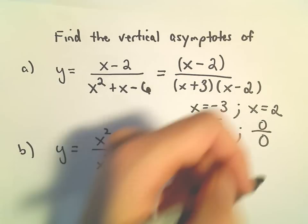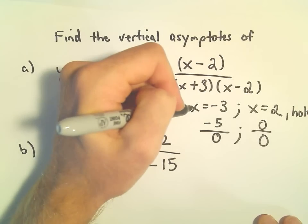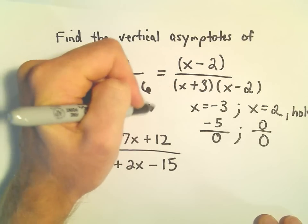So it turns out at x equals 2 we actually have a little hole in the graph. But at x equals negative 3, that's where we have our vertical asymptote.